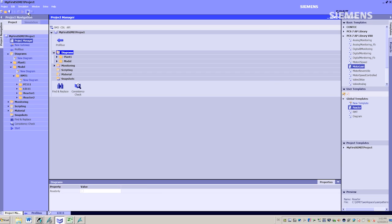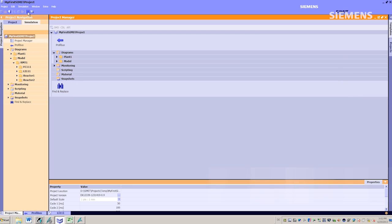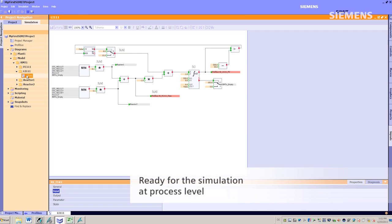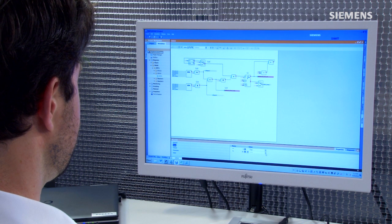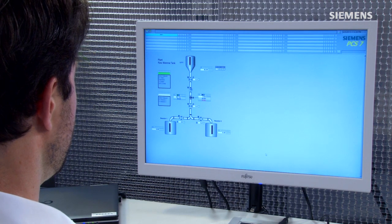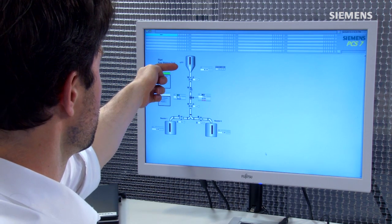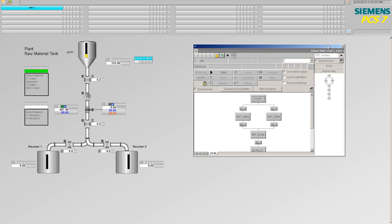I start the simulation, switch over to my tank model and initiate the filling process. If I switch to the OS view, I can see that my filling level is rising. I then start the SFC. All valves are correctly controlled and my reactor 1 is filled.